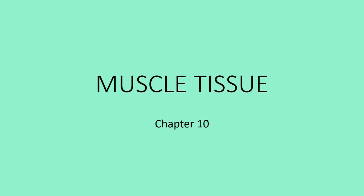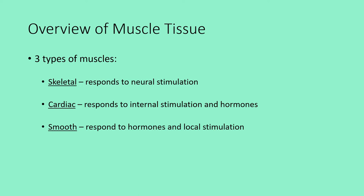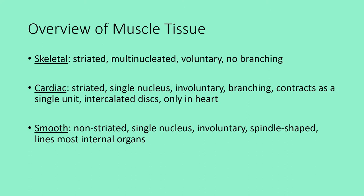This is chapter 10, which deals with muscle tissue — an overview of the different types. There are three types: skeletal muscle, which responds to neural stimulation; cardiac muscle, which responds to internal stimulation and hormones; and smooth muscle, which responds to hormones and also to local stimulation like stretching.